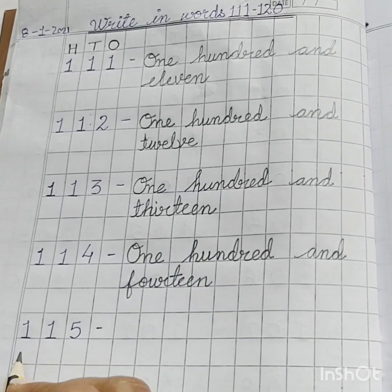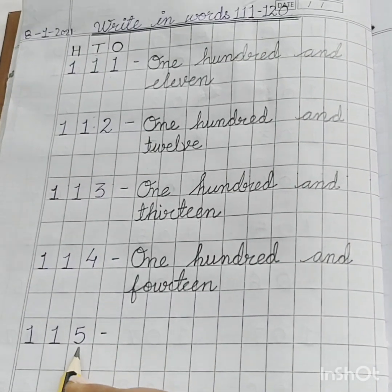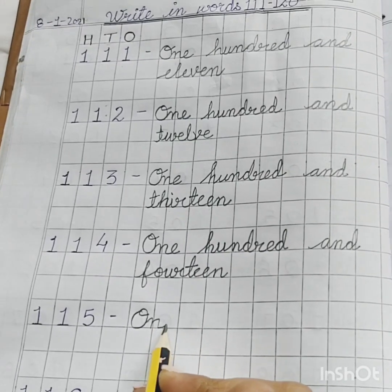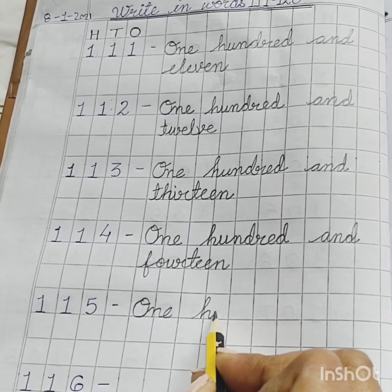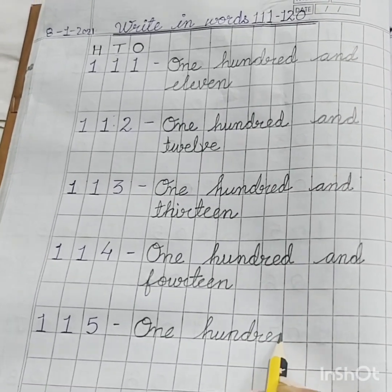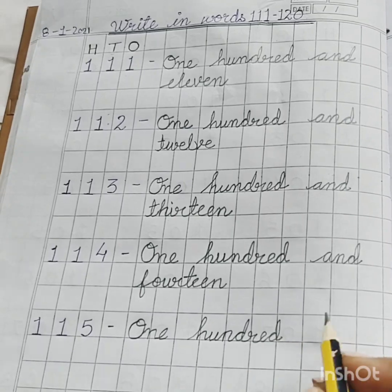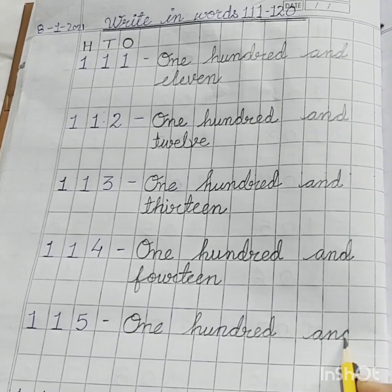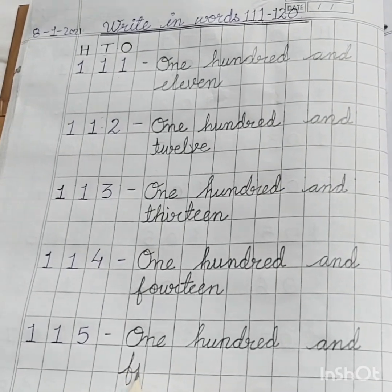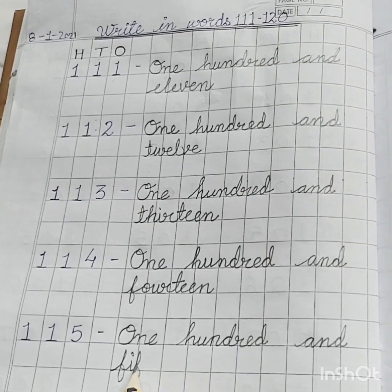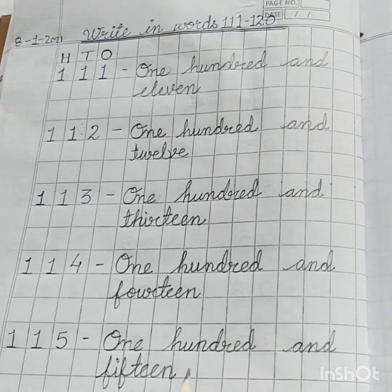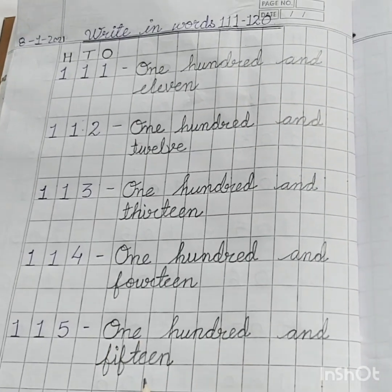One hundred and fifteen: O, N, E — one; H, U, N, D, R, E, D — hundred; A, N, D — and; F, I, F, T, double E, N — fifteen. 15 — one hundred and fifteen.